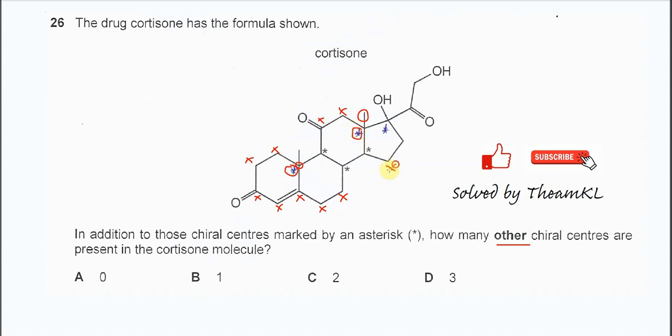So this one not going to be chiral centers. Not chiral centers. Not chiral centers. So the last chiral center is this one. So this carbon has one group, two groups, three groups and four different groups. So therefore this is another chiral center. So it means other than these three existing chiral centers, there are three more chiral centers there. So answer is D.